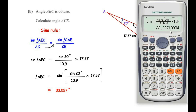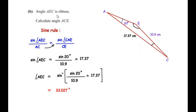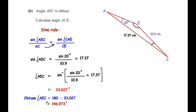Sine inverse gives us 33.027°. However, since the question states that angle AEC is obtuse (between 90° and 180°), the 33.027° is an acute angle. To get the obtuse angle we subtract from 180°: angle AEC = 180° − 33.027° = 146.973°.